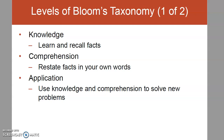At the first level of knowledge, we are basically just memorizing — we are able to recognize the information and recall it on a test. At the second level, comprehension, we are able to explain the information in our own words; we understand it well enough to explain it to someone else. The third level, application, is where we use the knowledge in our lives — we apply it to solve new problems and use it in other classes and in our lives.